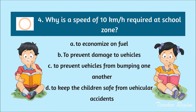Number 4. Why is a speed of 10 km per hour required at a school zone? A. To economize on fuel, B. To prevent damage to vehicles, C. To prevent vehicles from bumping one another, or D. To keep the children safe from vehicular accidents. The correct answer is letter D. To keep the children safe from vehicular accidents.